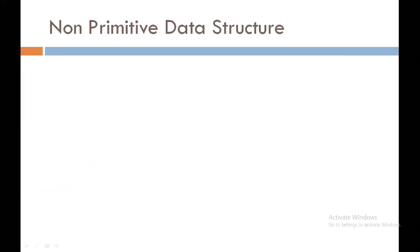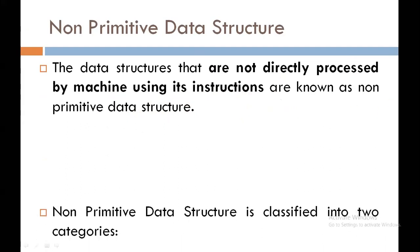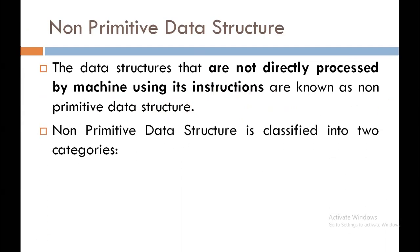The next type of data structure is non-primitive data structure. The data structures that are not directly processed by machine using its instructions are known as non-primitive data structures. In short, this data structure is not handled by machine but is created by the user. Non-primitive data structure is classified into two categories: linear and non-linear.